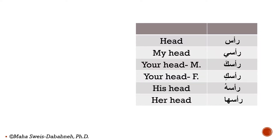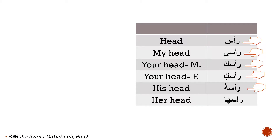Now let's apply the suffixes to the word 'ra'as' (head): 'ra'asi' (my head), 'ra'asaka' (your head, male), 'ra'asaki' (your head, female), 'ra'asuhu' (his head), 'ra'asaha' (her head).